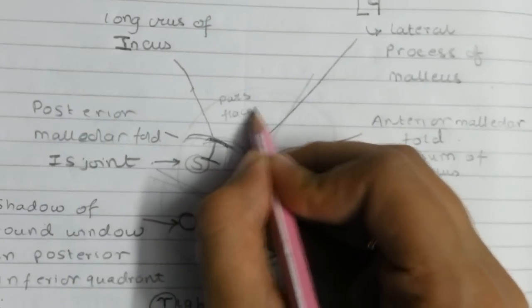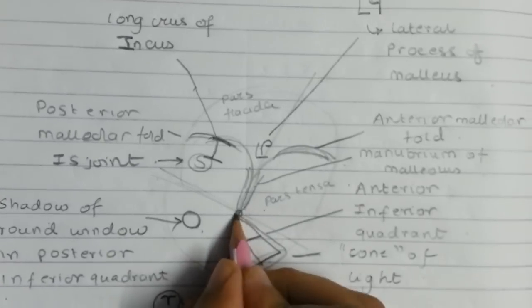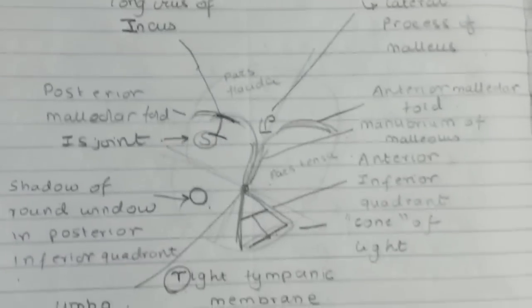Now we label all that is left out which is the pars flaccida and the pars tensa and the central umbo.